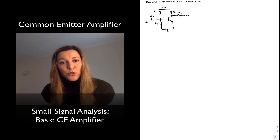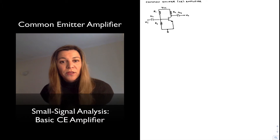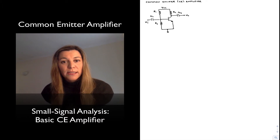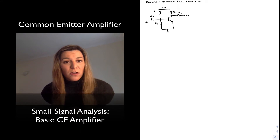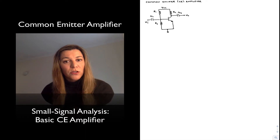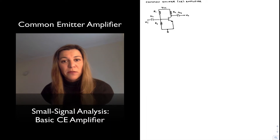In order to do that we will use the small signal model — the hybrid pi model — since we're looking at the AC small signal gain, input, and output resistances. I'm going to start with a basic common emitter amplifier for simplicity, just so that we get used to doing this type of analysis, and then I'll do the common emitter amplifier with an emitter resistor.